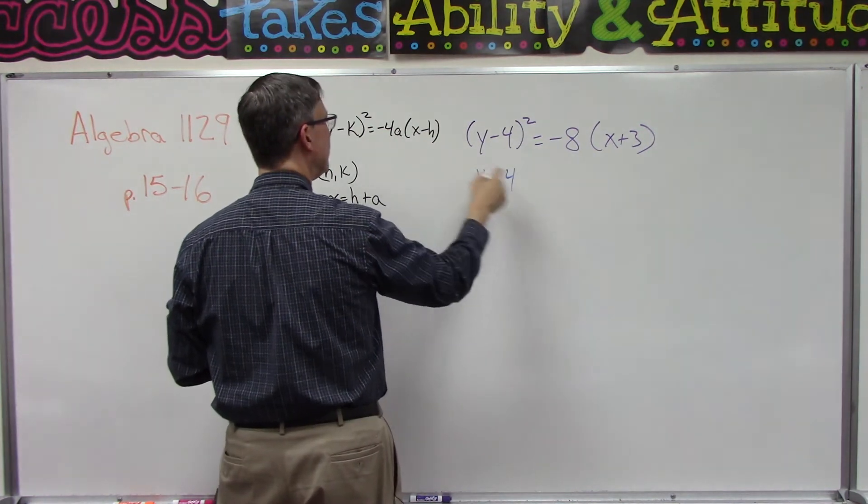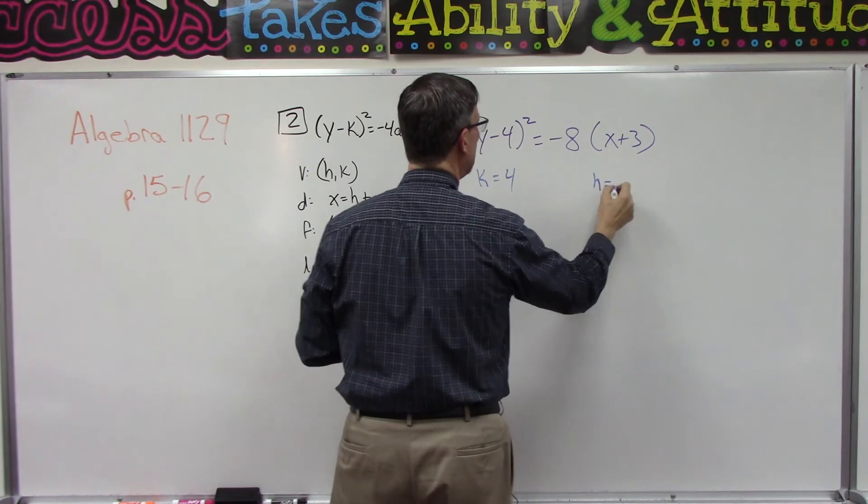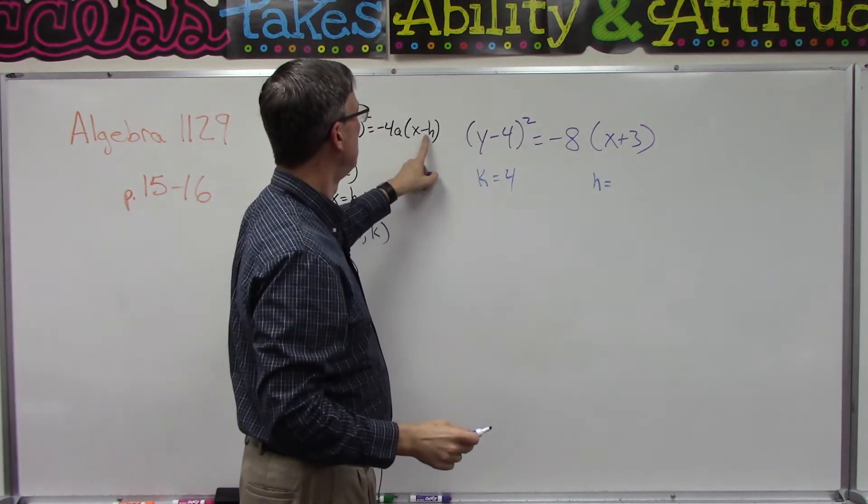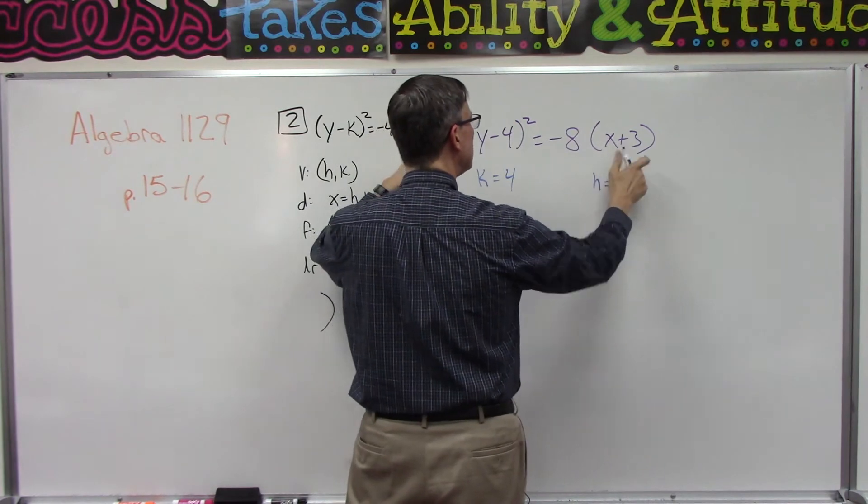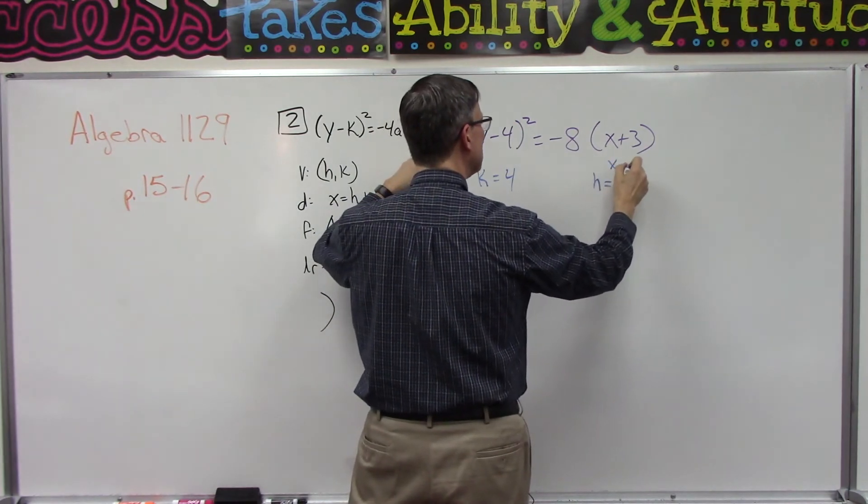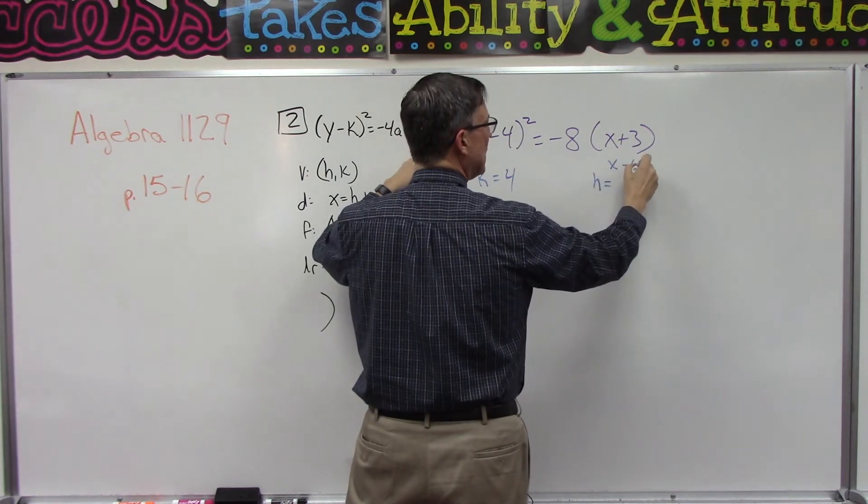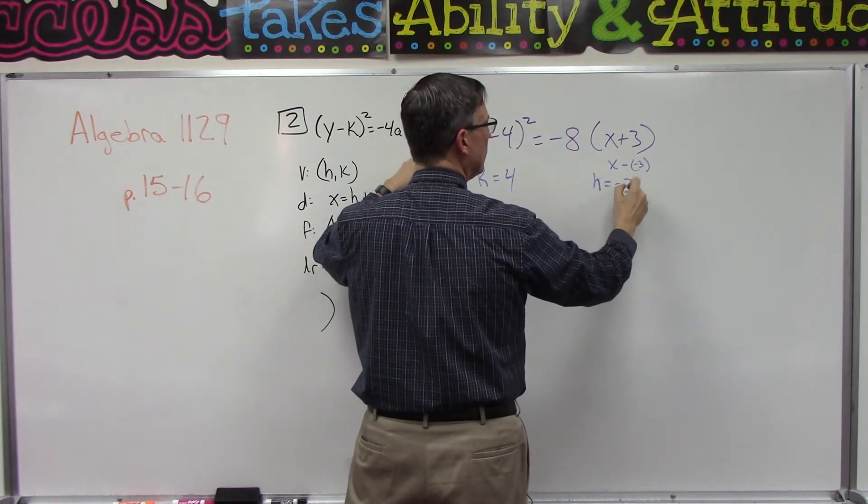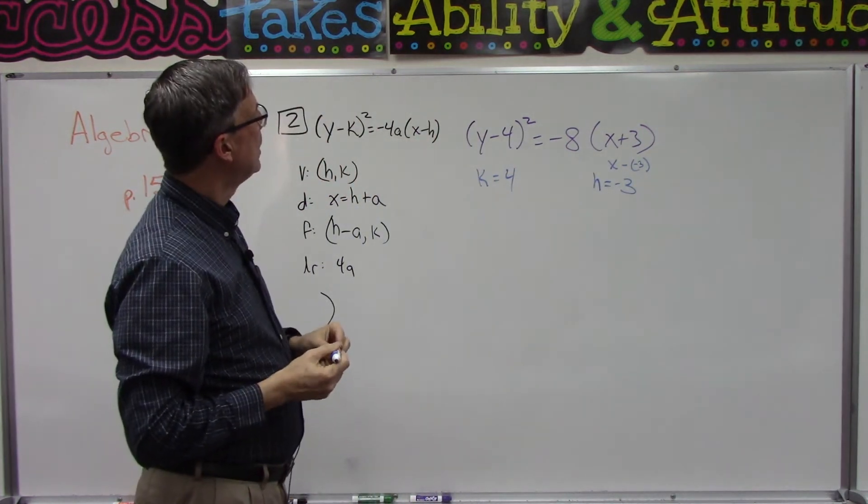Now when I come over here I'm trying to figure out what H is. H is X minus H, and here I have X plus 3. So remember it's like X minus what. So for this to equal X plus 3, I must have to plug in negative 3 for H. Alright, so those are two important numbers.